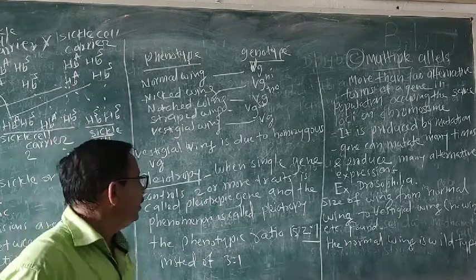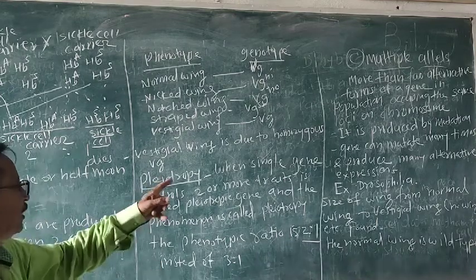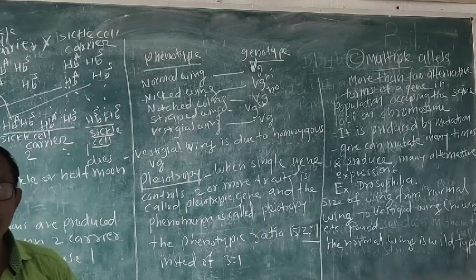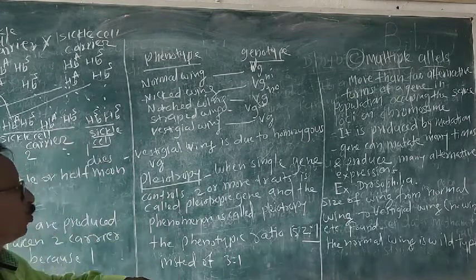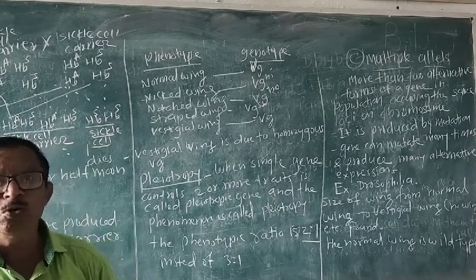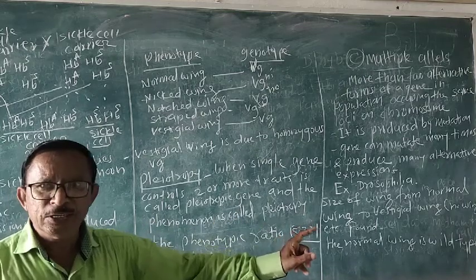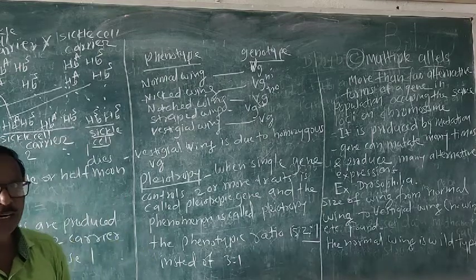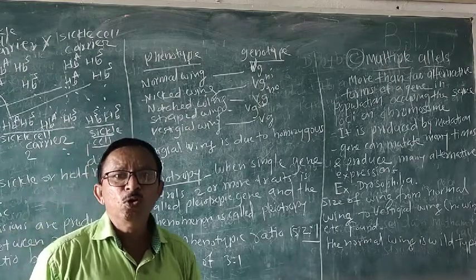Now we can go to study pleiotropy. What is pleiotropy? When a single gene controls two or more traits. Generally what happens is single gene, single trait. But when a single gene controls two or more traits — trait means character — it is called a pleiotropic gene.